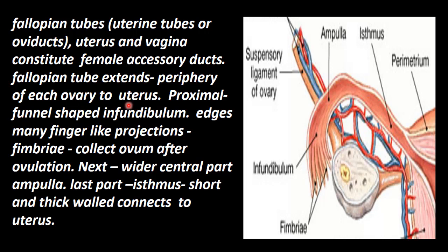The fallopian tube extends from the periphery of each ovary — the right side and the left side — connecting to the uterus. The ovum may be conducted through the oviduct to the uterus.